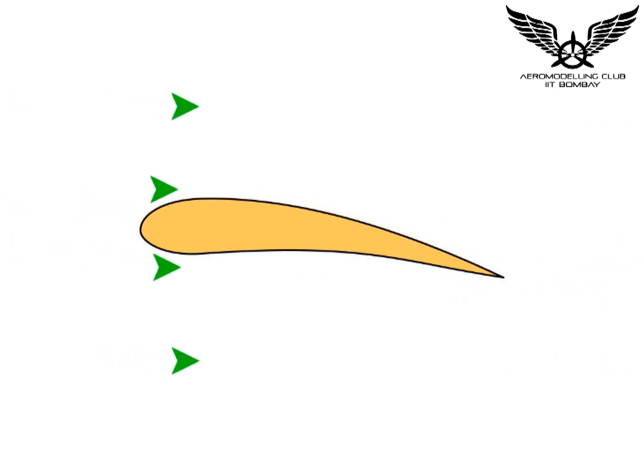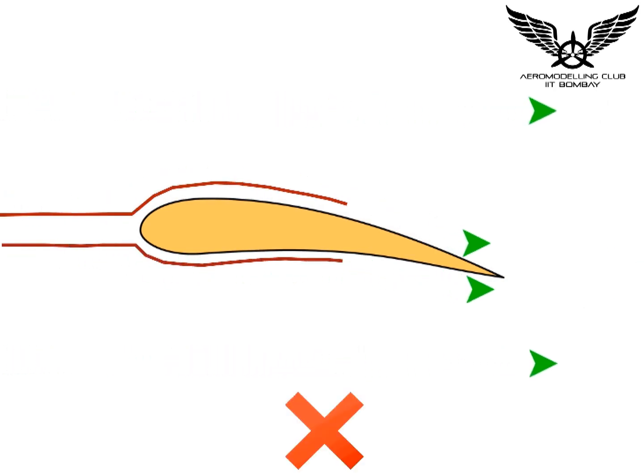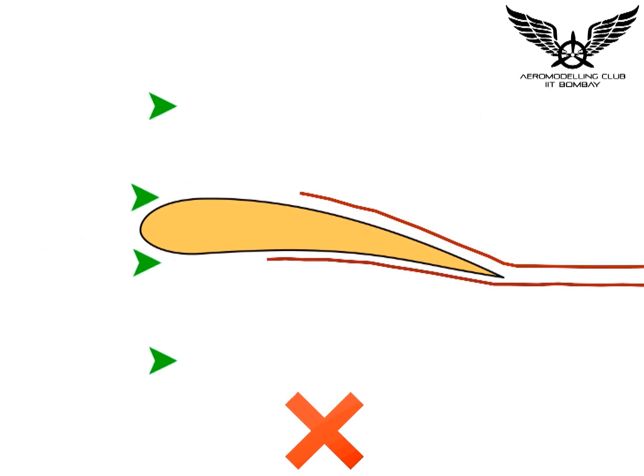This theory is wrong as it is incorrect to assume that the particles should meet at the same time. The second mistake is that Bernoulli's equation cannot be applied between two streamlines.